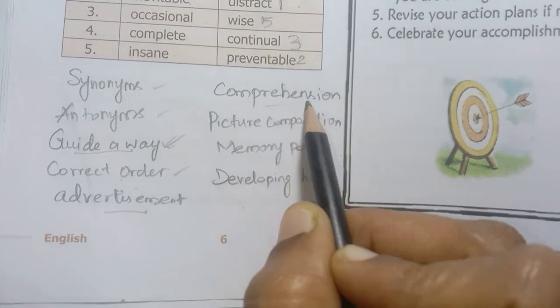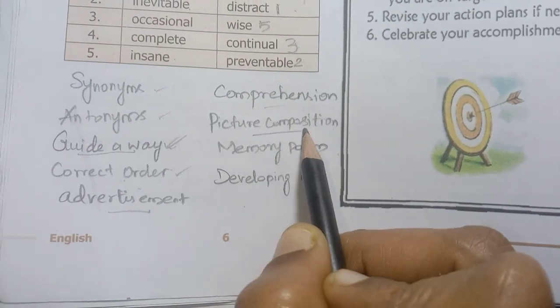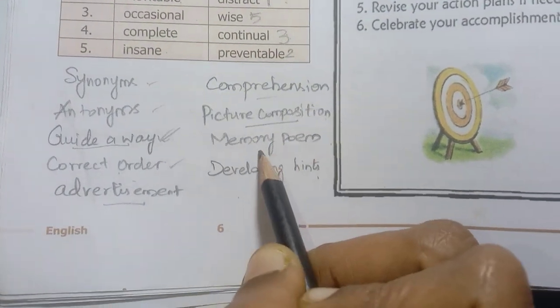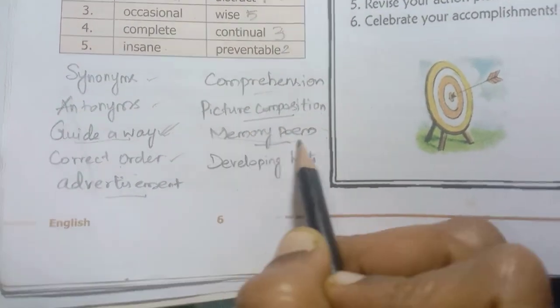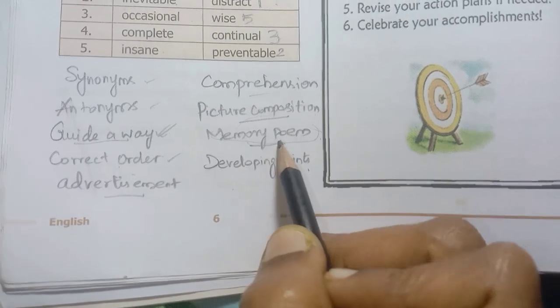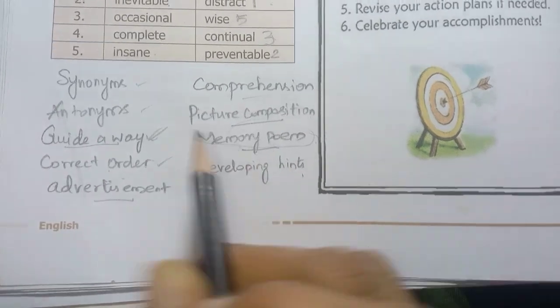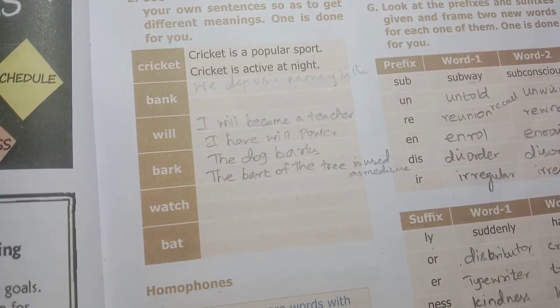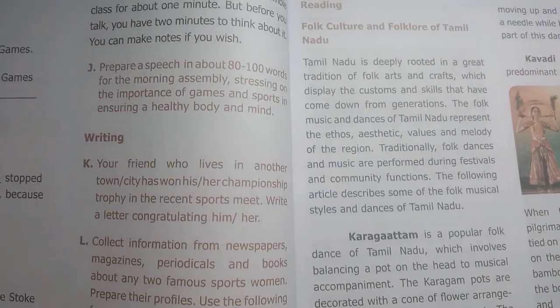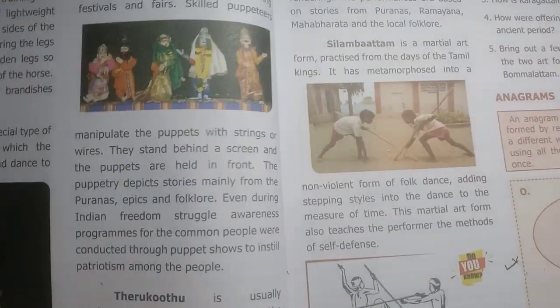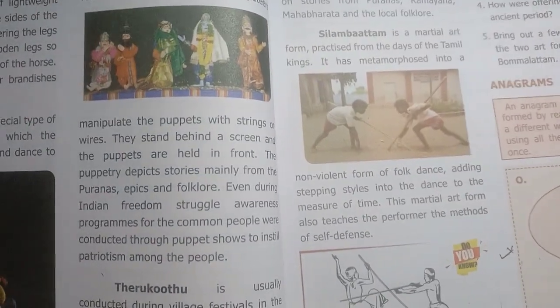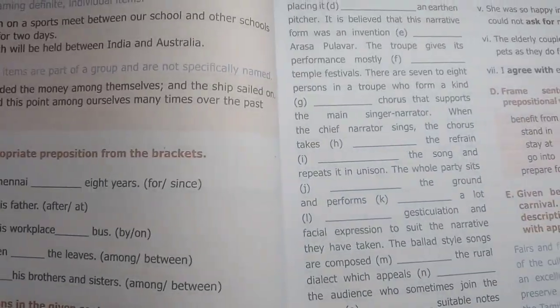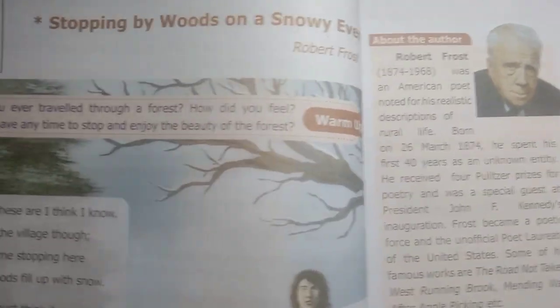Advertisement, comprehension, picture composition, memory poem — compulsory, practice and develop. Grammar part: homonyms, homophones, prefix, suffix — practice these. Also homophones.